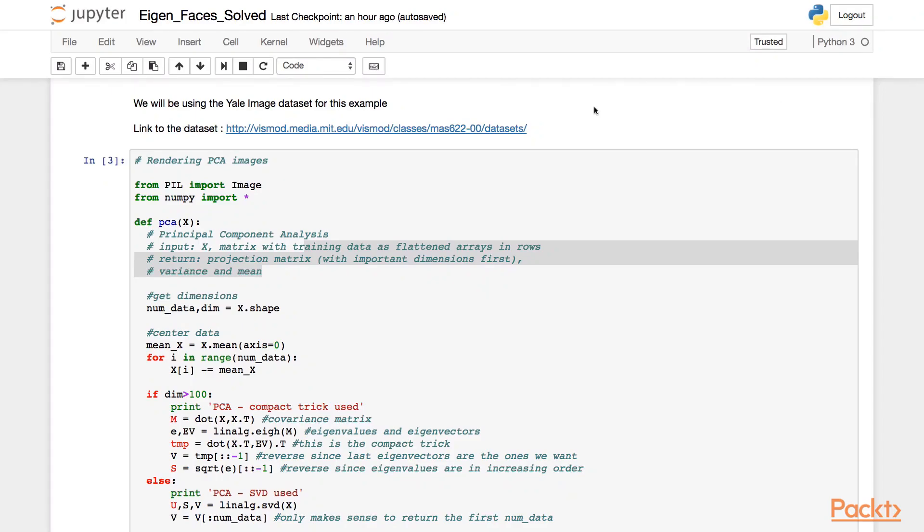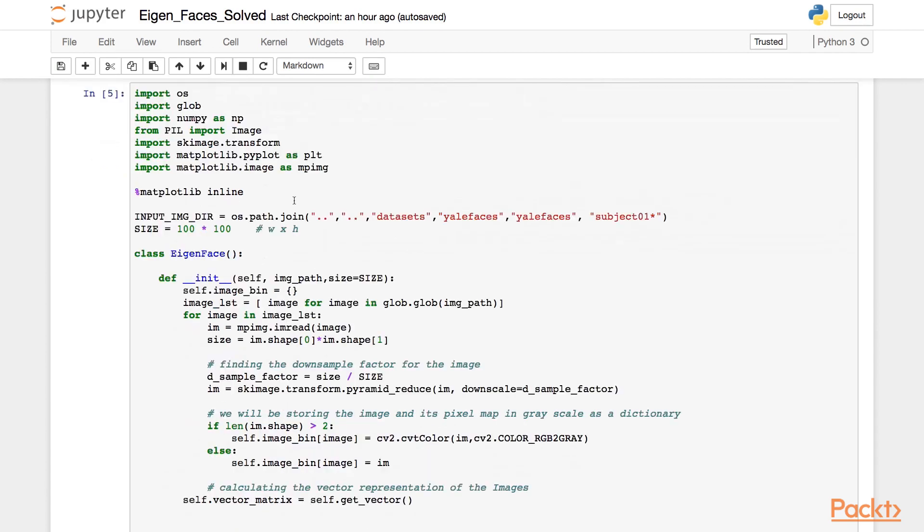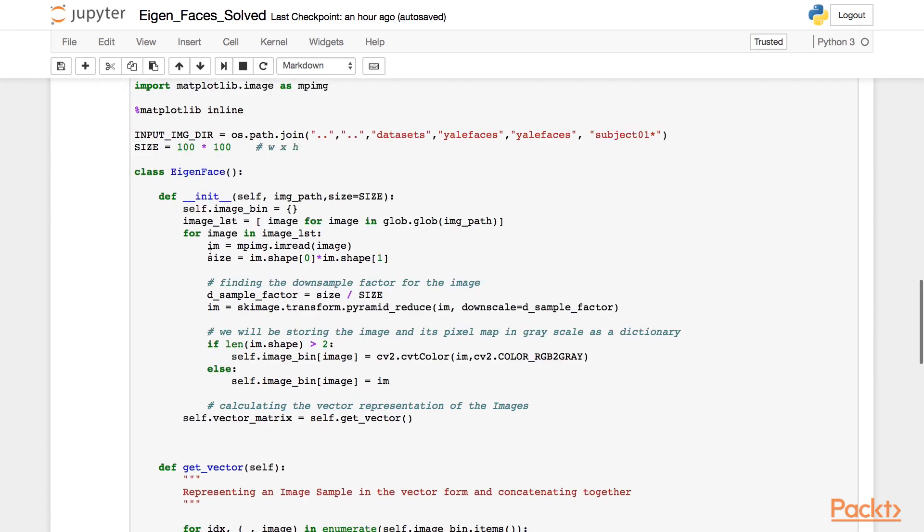Now we'll see how we can extract principal components from images. For this example, we'll be using the Yale dataset for computing the principal component analysis. So as a first step, we input the images from the Yale dataset and set the size factor by setting the width and height as 100 by 100.